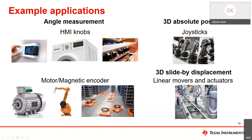Now for some example applications. Angle measurement is a popular application for linear and 3D sensors. The first category is human interface knobs — HMI knobs — found in thermostats, washer and dryers, and ovens or stovetops. Unlike mechanical solutions used in the past, a 3D linear hall effect sensor provides a contactless solution with less wear and tear over time, creating a more reliable solution.